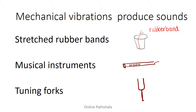The third example is a tuning fork, which we typically use in the laboratory. The tuning fork looks like a fork shape, and essentially we strike it and it starts vibrating — it does a to-and-fro motion very quickly, and that is what produces sound. So mechanical vibrations produce sound.